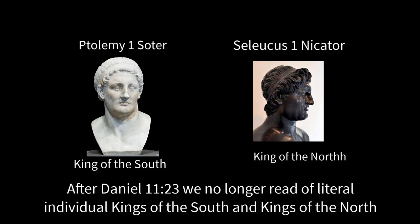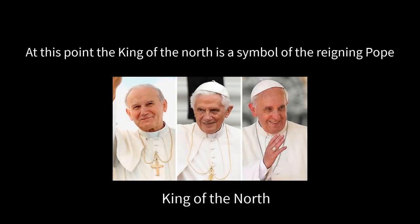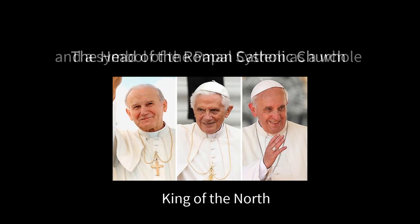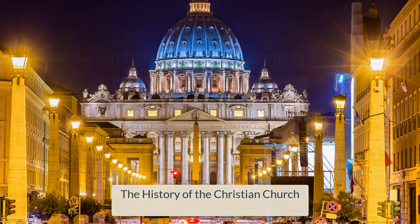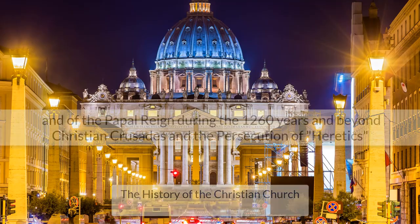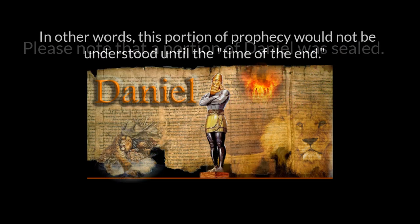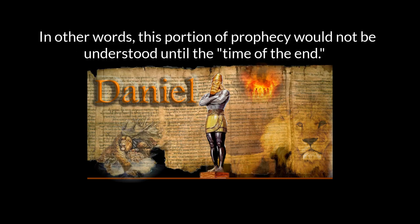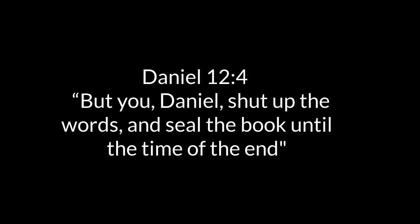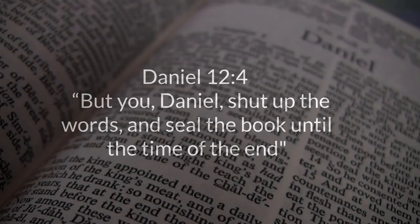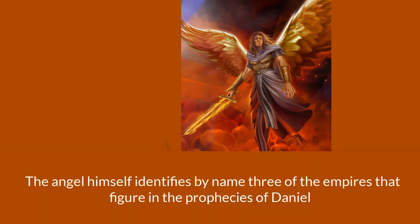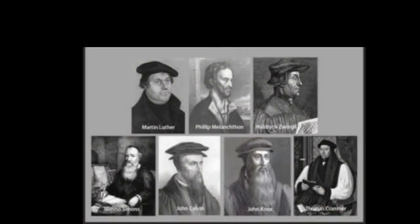After Daniel 11:23, we no longer read of literal individual kings of the south and kings of the north. At this point, the king of the north is a symbol of the reigning pope, the head of the Roman Catholic Church, and a symbol of the papal system as a whole. The remainder of the chapter concerns the history of the Christian church and of the papal reign during the 1260 years and beyond. Please note that a portion of Daniel was sealed — this portion of prophecy would not be understood until the time of the end. Daniel 12:4 speaks to this. However, not all of the book was to be sealed. The angel himself identifies by name three of the empires that figure in the prophecies of Daniel. Early Bible scholars have understood and correctly interpreted much of the book of Daniel for several hundreds of years.